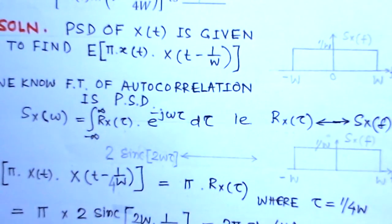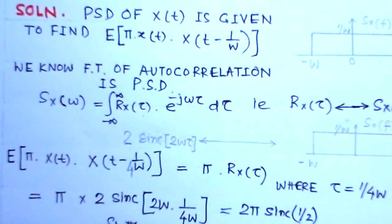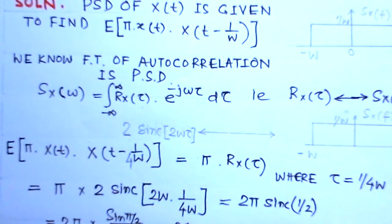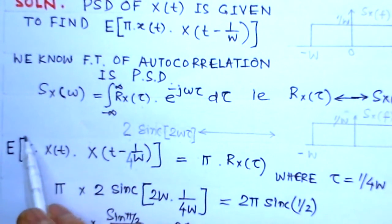Now we have to find expected value E[π X(t) X(t - 1/4W)]. We can write this because once we find the expectation it will be integral, so π we take out, giving π into Rx(τ). The value of τ here is 1/4W because this is X(t) X(t - τ), so this is 1/4W.